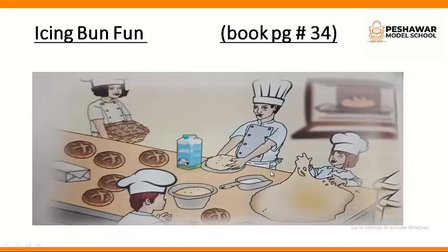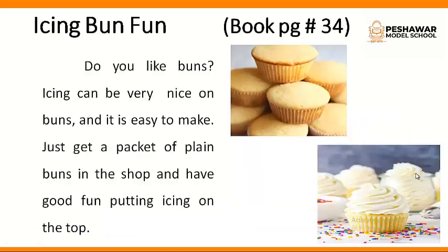What is a bun? A bun is a sweet cake. It is a bread roll. Here is the picture of a simple bun and here is the picture of a bun with icing. Do you like buns? Icing can be very nice on buns and it is easy to make. Some are simple buns, but you can also make them beautiful by adding some icing. What is icing? Icing might be the cream on the topping of the cake — it can be cream, curd, or cherries, jellies, and other treats to make your cake look beautiful.